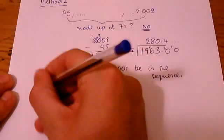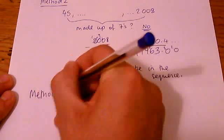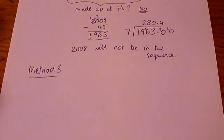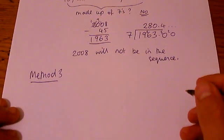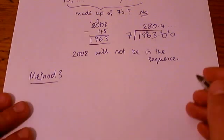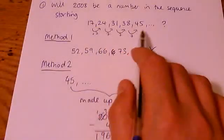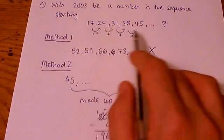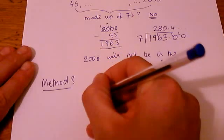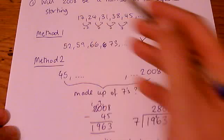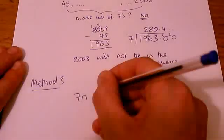Method three is perhaps the one that most maths teachers would use. People that were really proficient with their maths would say, OK, well, if I want to make this number 2008 from this sequence, a good starting point is to work out a formula for this sequence. So let's work out the formula for that sequence. It's going up in sevens, so it's 7n, and it starts at 17. So my formula is 7n plus 10.